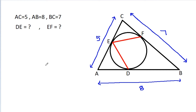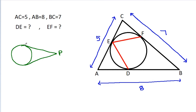In any circle, from any point P, if we draw two tangents to the circle — suppose the tangent points are A and B — then PA equals PB. So here, from point A, if AD is 'a', then AE is also 'a'. From point B, if BD is 'b', then BF is also 'b'. And from point C, if CE is 'c', then CF is also 'c'.